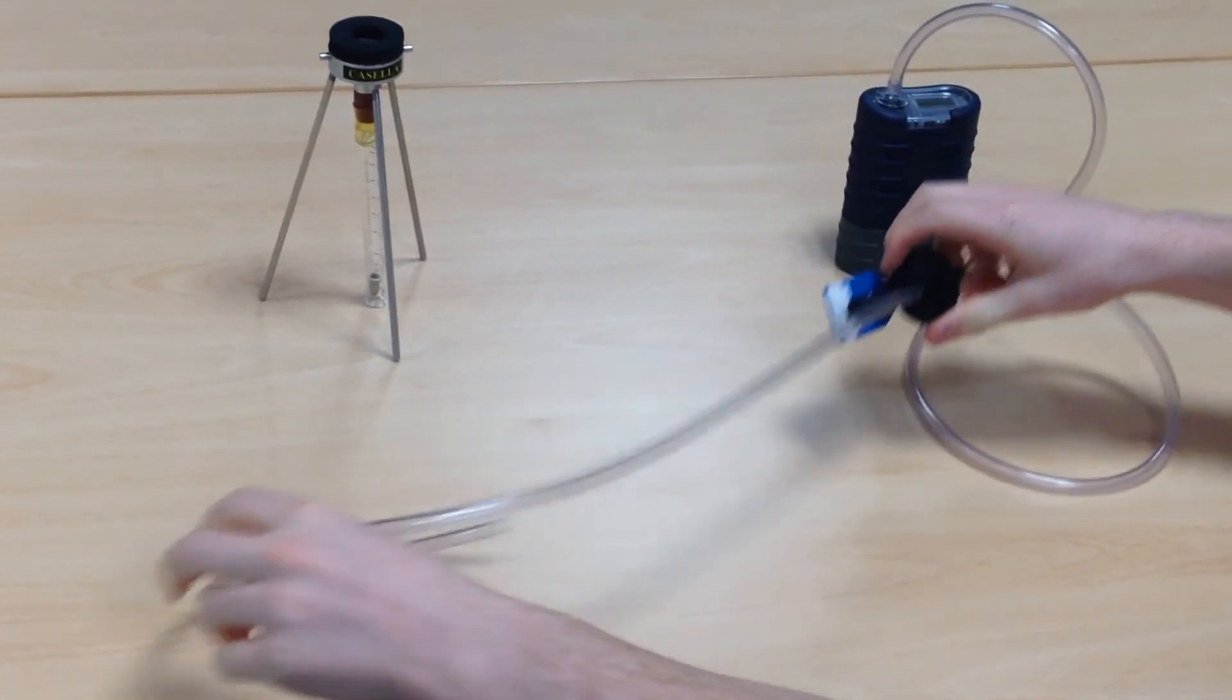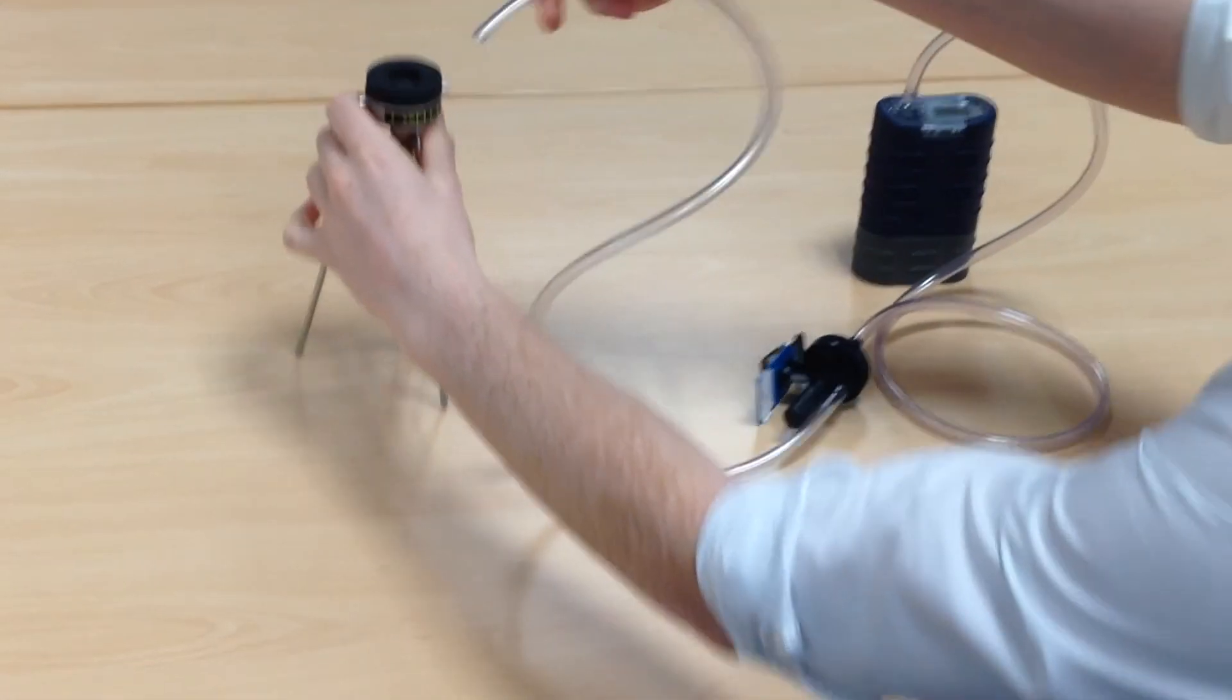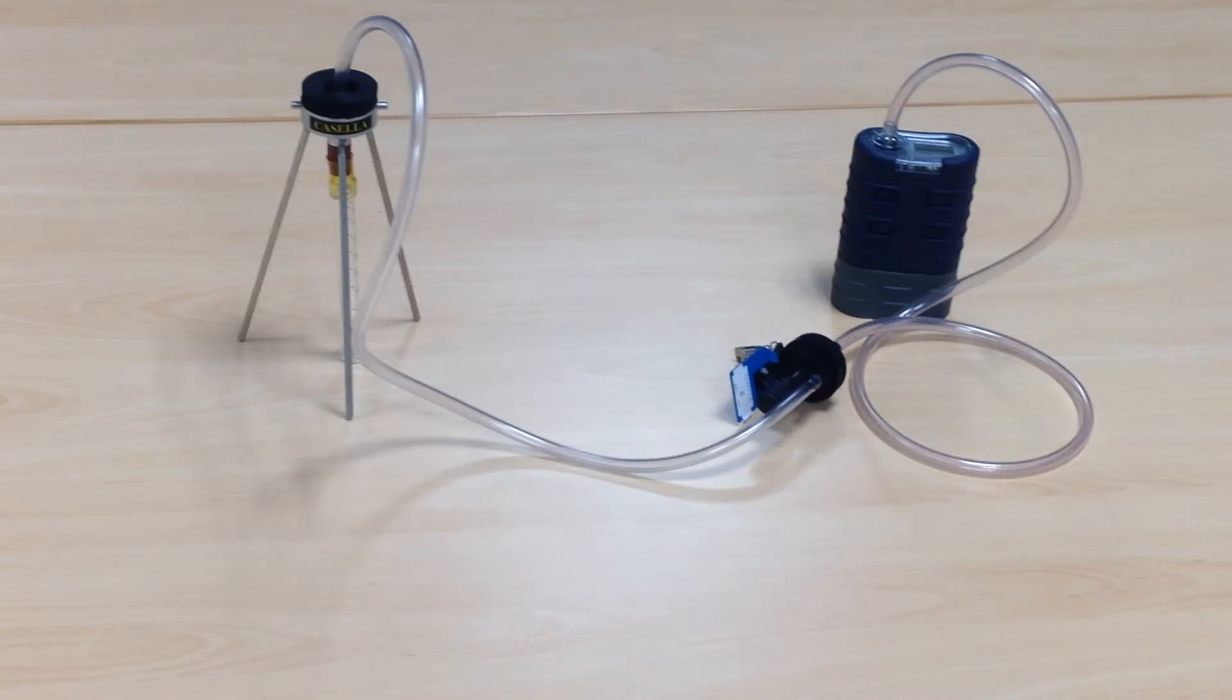Attach the second piece of tubing to the inlet of the sampling head and to the field rotameter. When set up, the calibration train should look something like this.